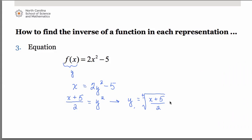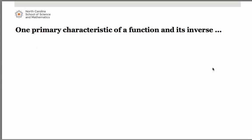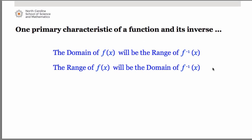So this is our equation for the inverse. One of the major characteristics of a function and its inverse: the domain of f(x) becomes the range of f⁻¹(x), and the range of f(x) becomes the domain of f⁻¹(x). This confirms how the process of finding the inverse by flip-flopping x and y works.